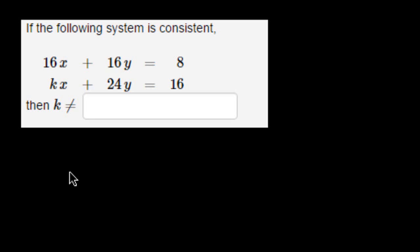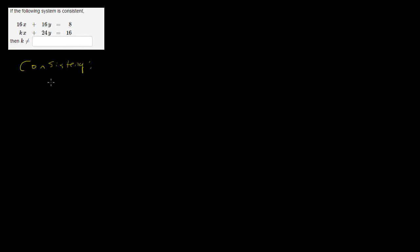What's up guys, in this video I'll be showing you how to solve for K, basically what K cannot equal to if the following system is consistent. Just for recap, consistency is when there is one unique solution or infinitely many solutions.